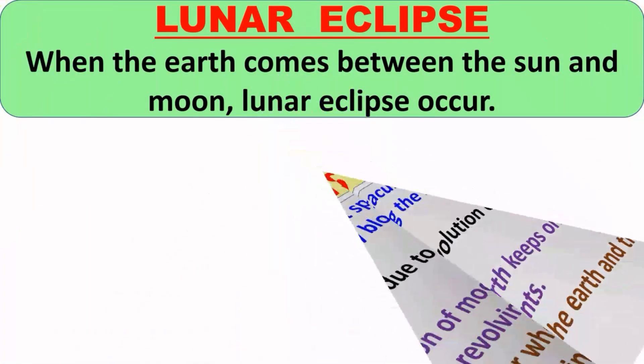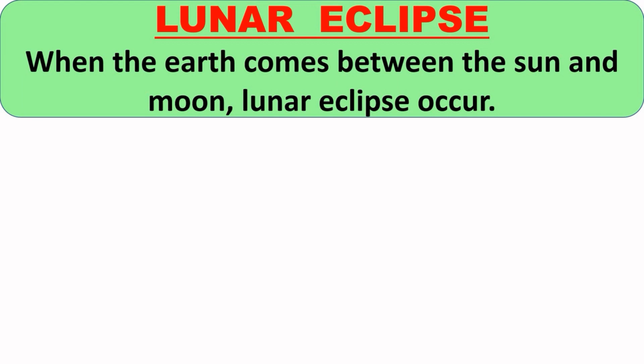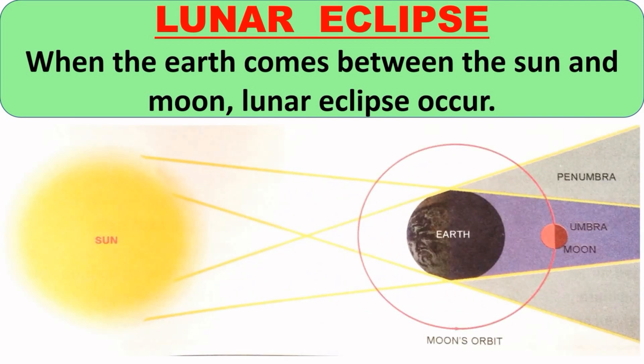Now we will study about an interesting topic, that is lunar eclipse. We can see a lunar eclipse only on the night of a full moon day. During a lunar eclipse, earth comes between the sun and the moon, and the earth blocks the path of sunlight, and because of this the shadow of the earth is cast on the moon.